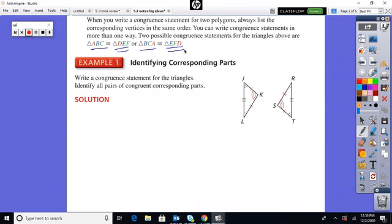Based on these markings, we know which angles correspond with the angles of the other triangle. Correspond means they're congruent to. Single loop on L, single loop on R, double loop on J, double loop on T, etc. Same thing with the sides. JK has a single slash, ST has a single slash.